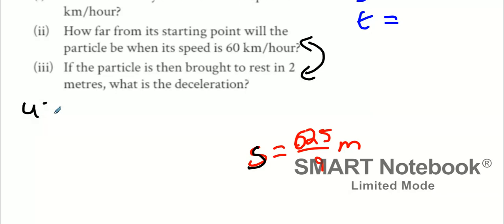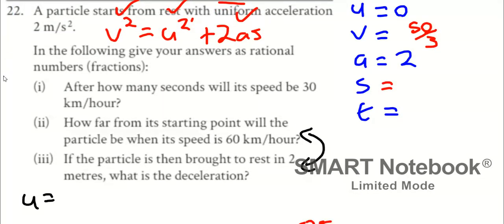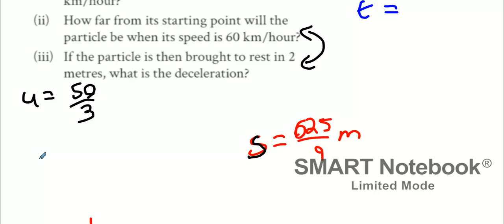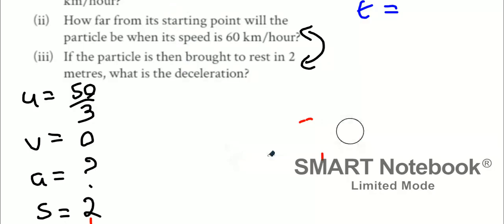So it's initial speed is what? 60 kilometers an hour, which we said earlier was 50 over 3. Our final velocity is going to be zero. A is the goal of the question. Do we know what S is? 2 meters. What formula do you think I should use? That's a direct line.